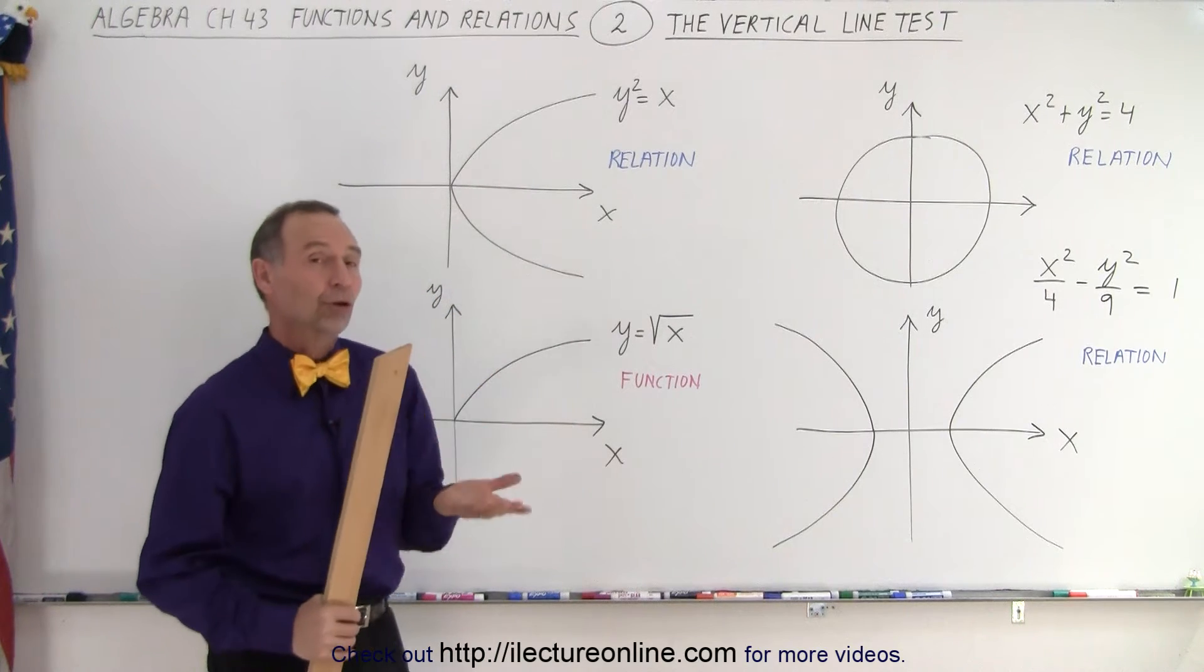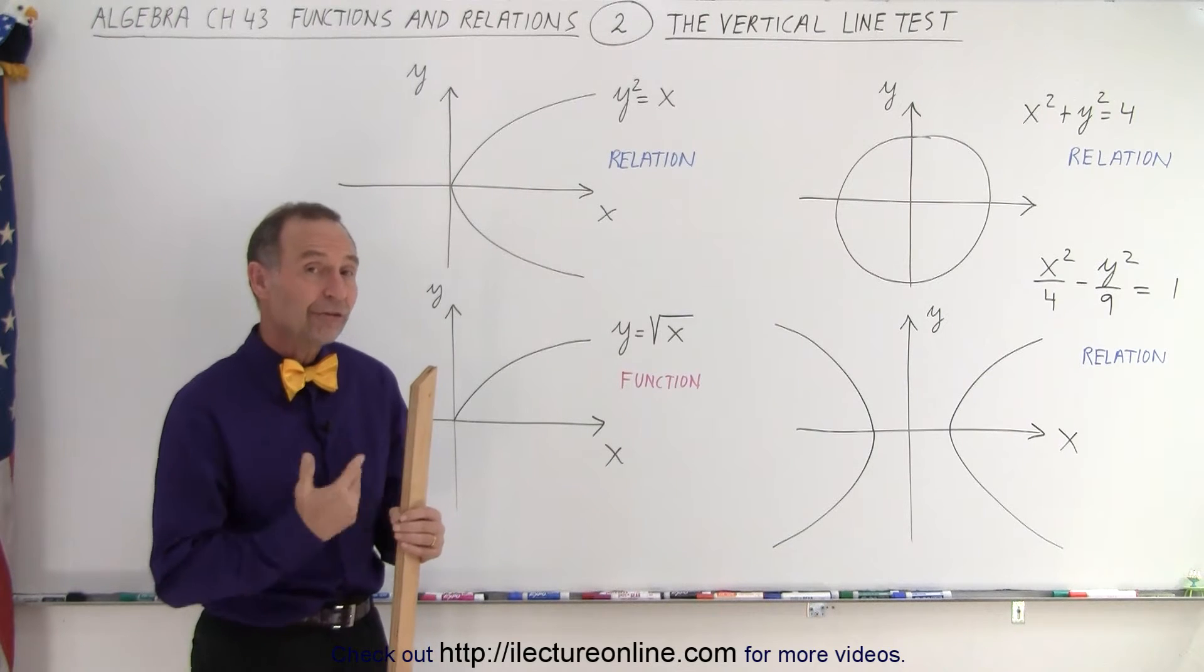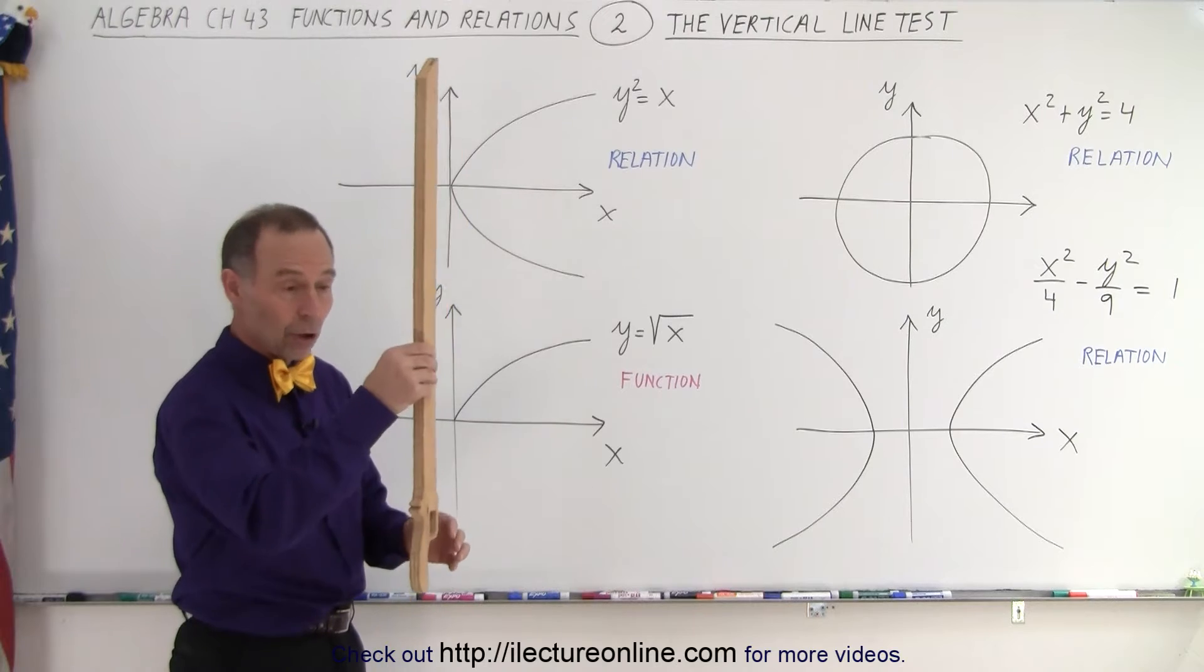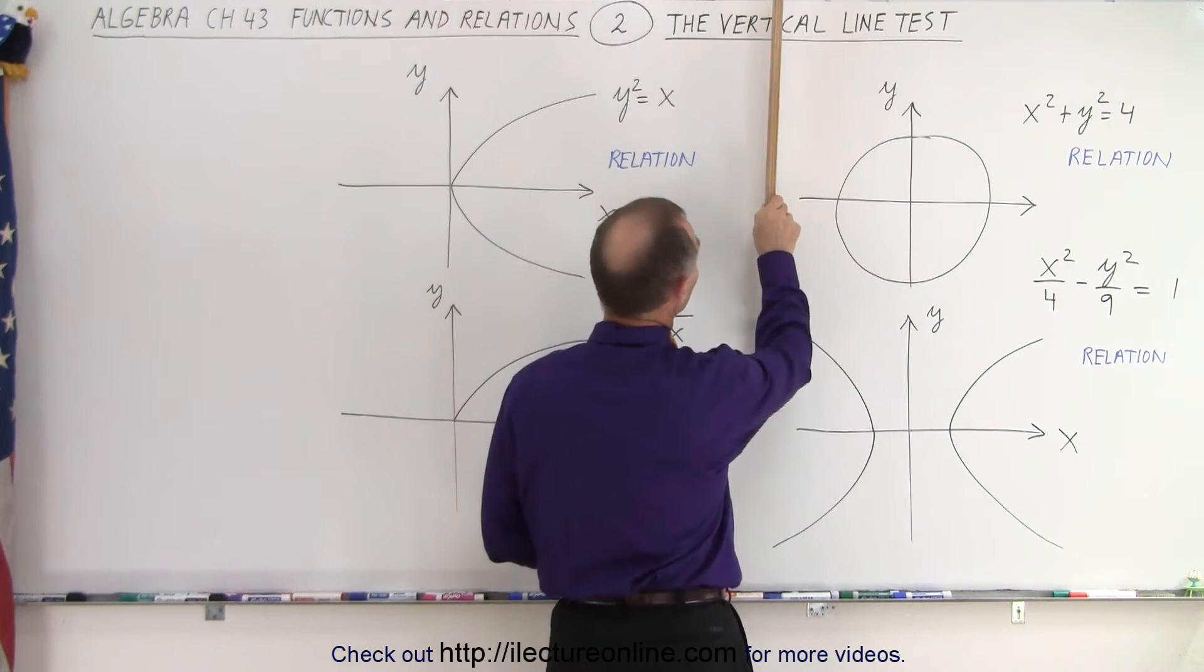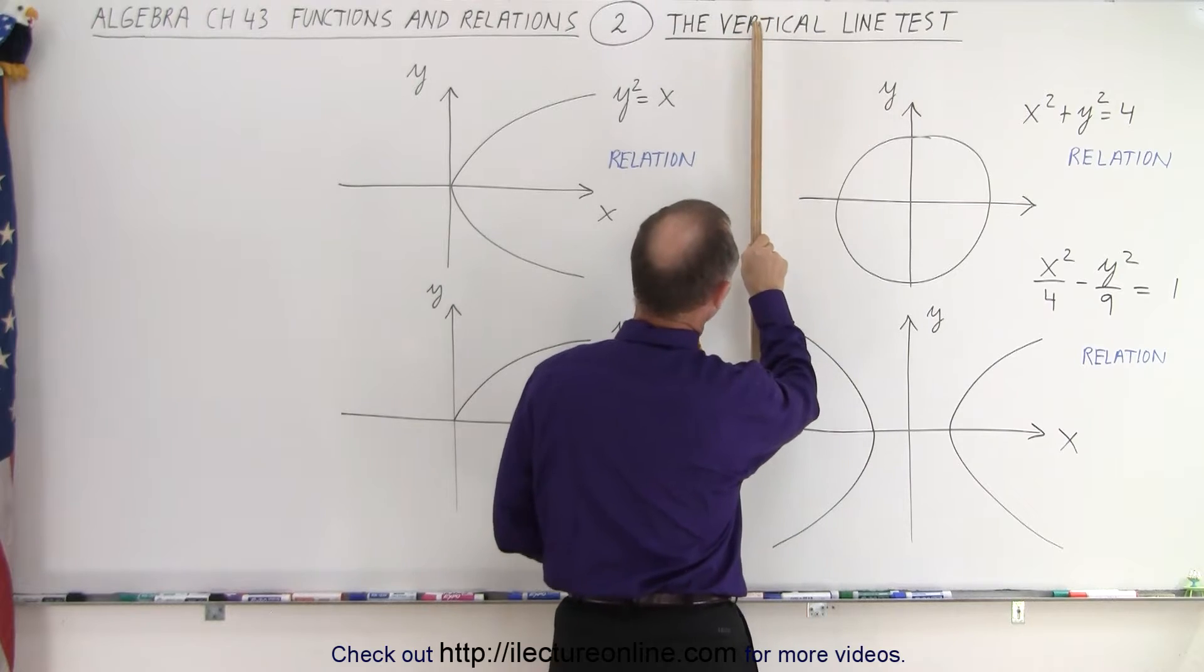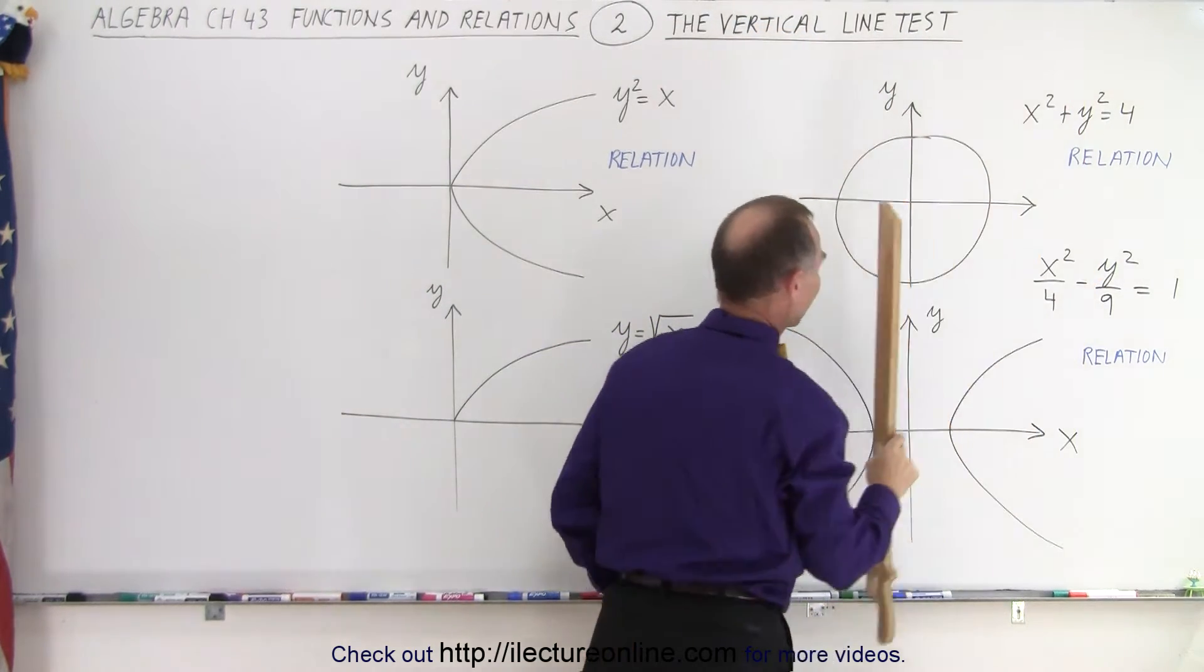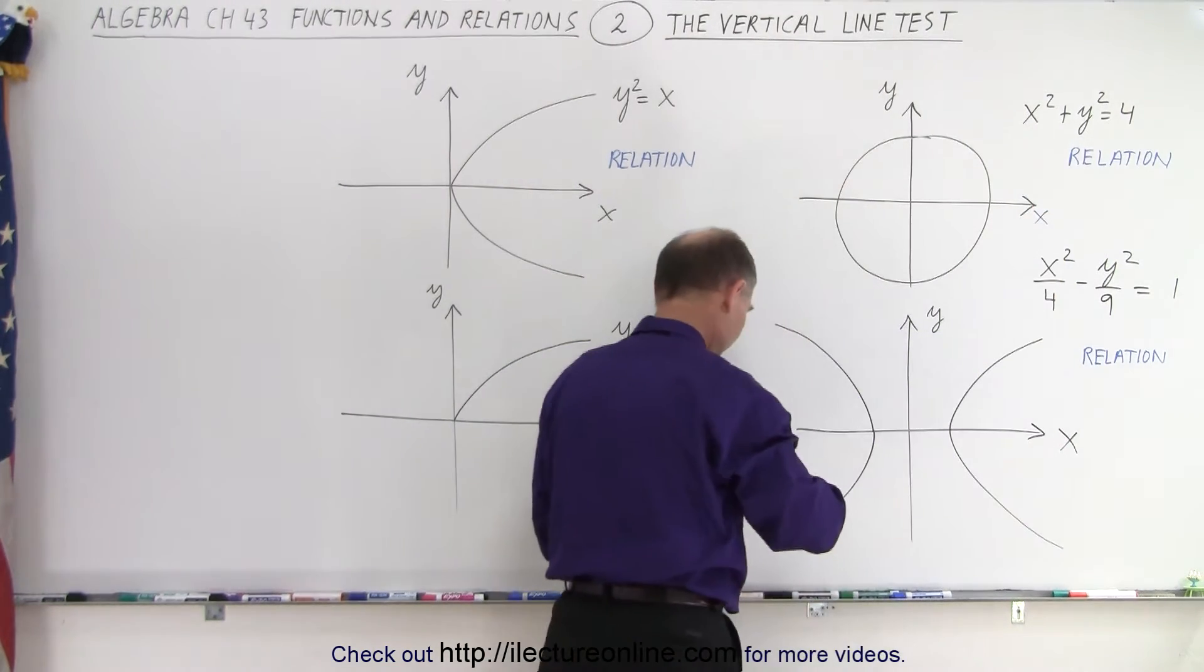The way to determine, at least graphically, whether we're dealing with a relation or with a function is to do the vertical line test. We take a long object like this and put it vertically—that's why it's the vertical line test—and then move it across from left to right on the x-axis.